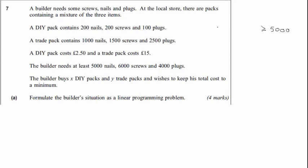We're not going to write the left-hand side out yet, but it's worth writing something times X plus something times Y, because the amount of nails bought will be a certain amount of X and a certain amount of Y — those are our decision variables, and this will always be the case. We can do the same for screws — we need at least 6000, so greater than or equal to 6000 — and the same for plugs, where we need at least 4000.